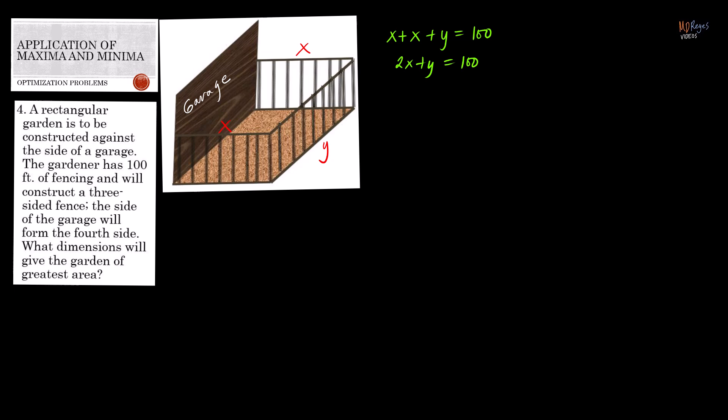Looking at the question — what dimensions will give the garden of greatest area — greatest area means we want to maximize the area of the garden. It's in the form of a rectangle, so the area is computed by multiplying the width by the length: A = x times y. We want to maximize this area.